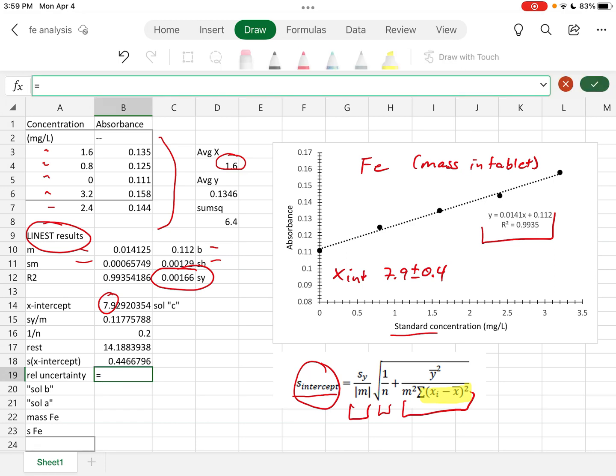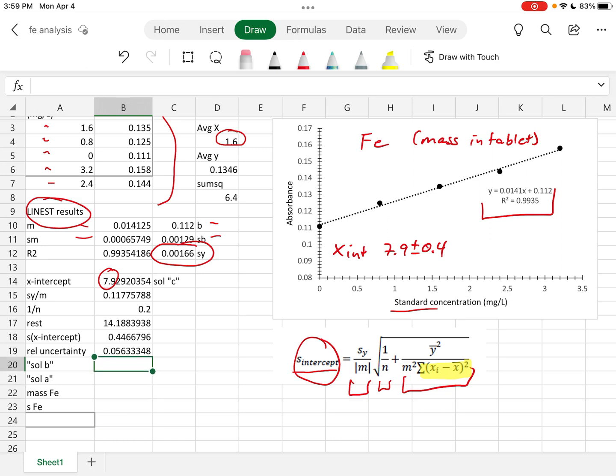In order to calculate the relative uncertainty, this is just like a relative standard deviation. We take the uncertainty and we divide by the average and we get that, and we're going to keep that as is. We're not going to multiply it by 100 or anything like that to get a percent.